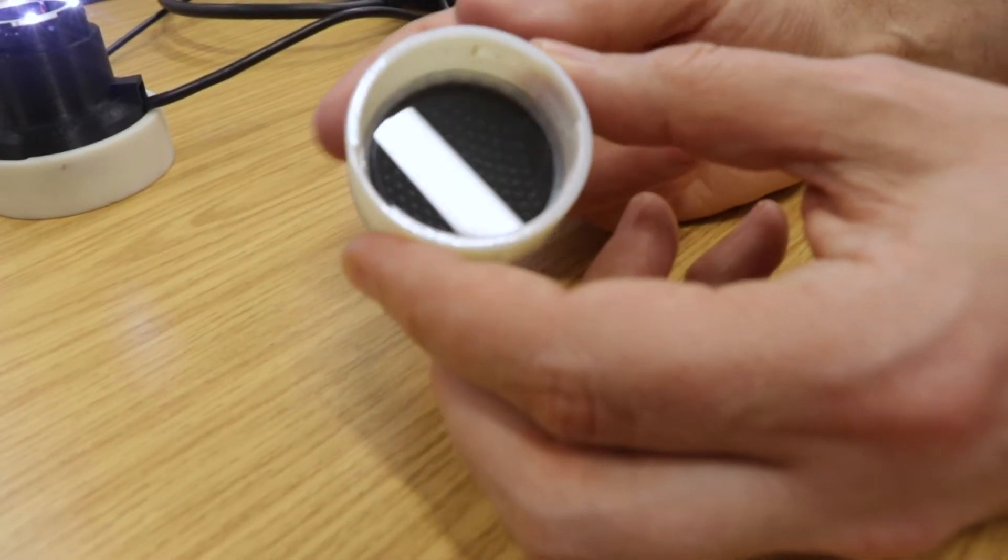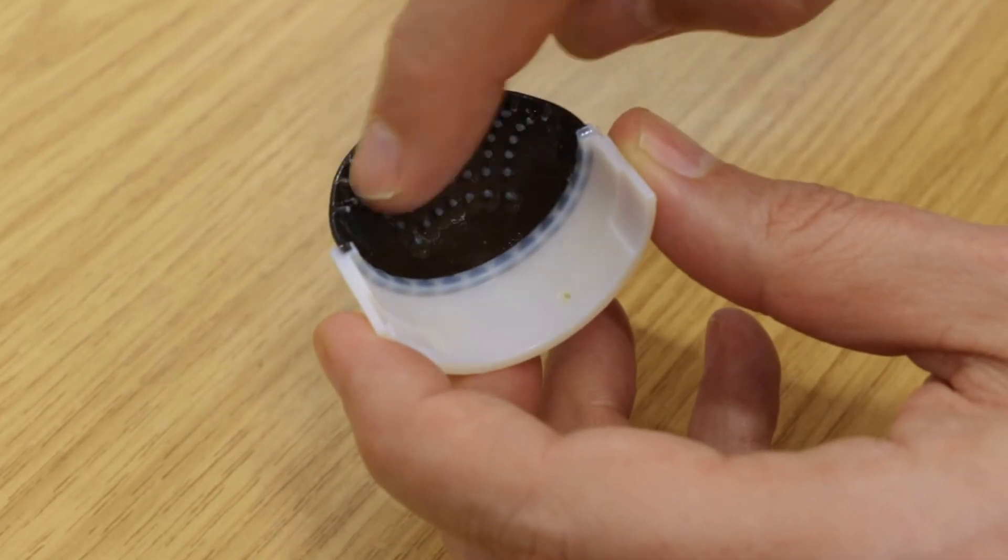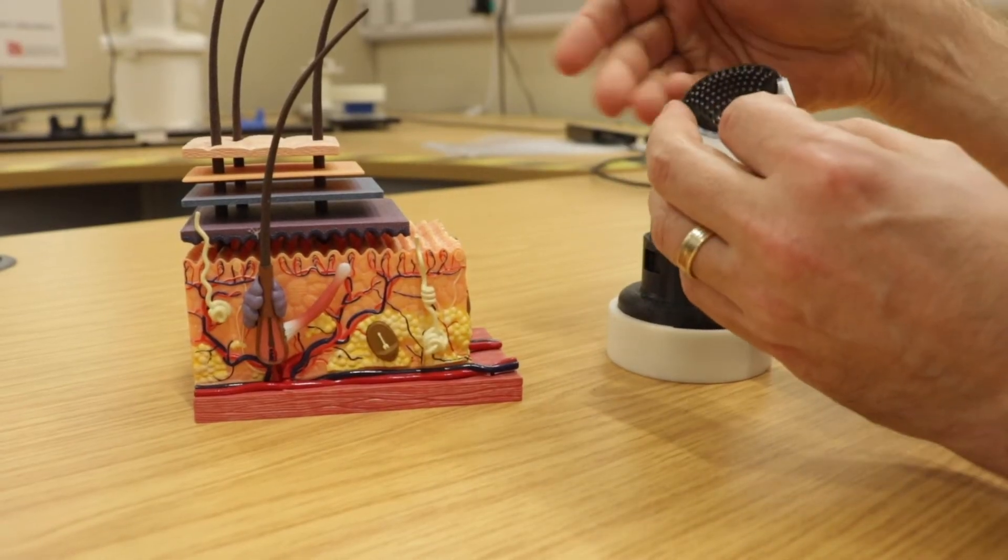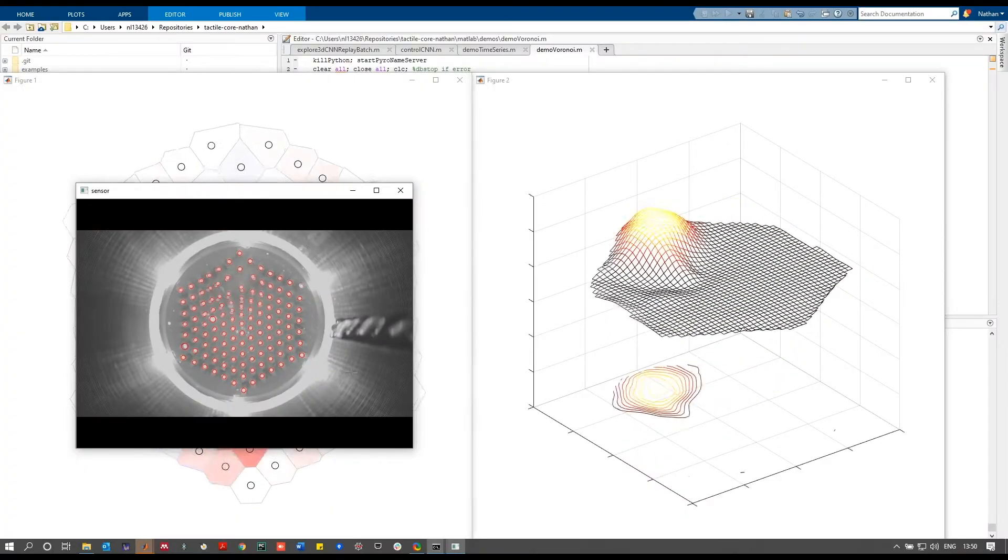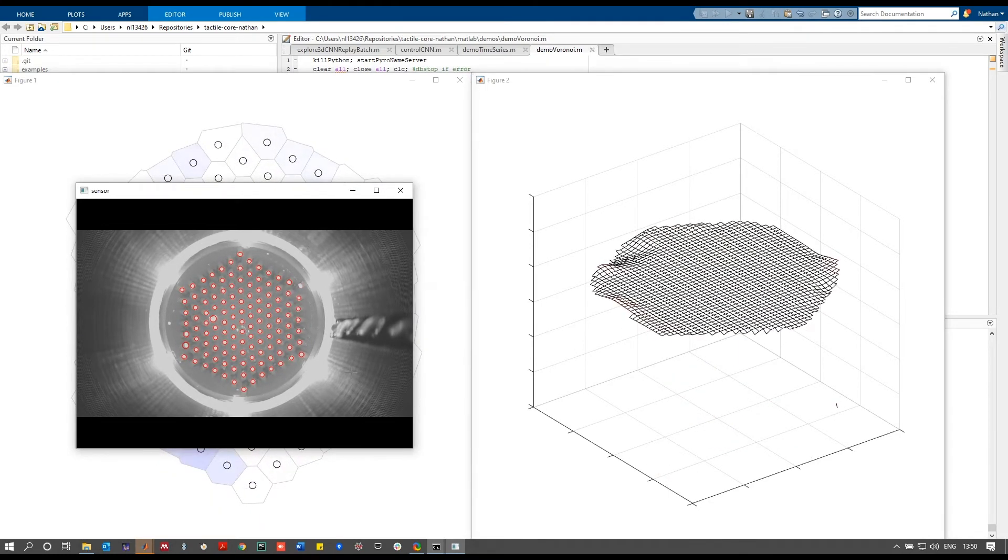In our artificial tactile sensor, we 3D print analogous bumps underneath the artificial skin. Rather than in human skin where nerve cells pick up that motion of the bumps, we use a camera inside the tactile sensor.